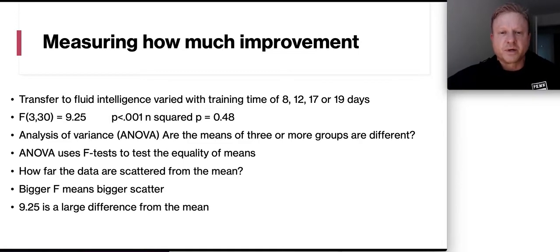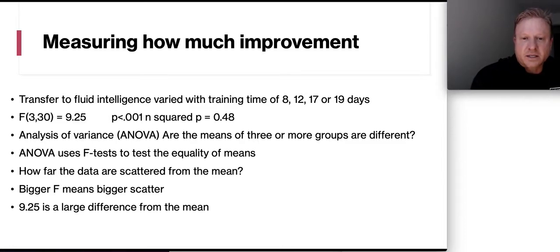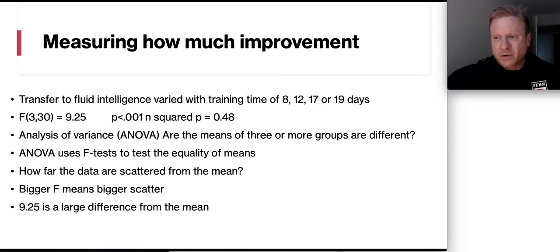Now let's measure how much improvement. So the transfer to fluid intelligence did vary with the training time of 8, 12, 17, or 19 days. So looking at, if you look at the f-test, that came out to be 9.25. Your p-value is below 0.001. And the n-squared p was 0.48. So this f-test is the analysis of variance, the ANOVA. And that's answering the question, are the means of three or more groups different? So the ANOVA is using that f-test to test the equality of the means. How far the data are scattered from the means. So the 8, the 12, the 17, 19, are those training results really different from each other? The bigger the f, then the bigger the scatter they are from the mean. 9.25 is large, which means these four tests are quite different from each other.